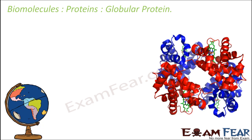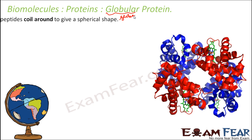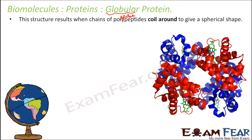The next type is globular protein. The word globular is derived from globe, because these proteins resemble a spherical shape. This structure results when chains of polypeptides coil around to give a spherical shape — unlike fibrous proteins which have linear chains held by hydrogen bonds. In globular proteins the polypeptide chains coil around to form a spherical structure, and in the figure you can see this roughly spherical shape.